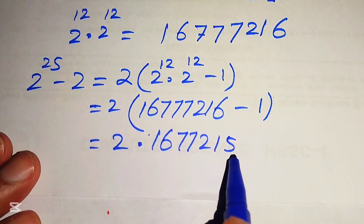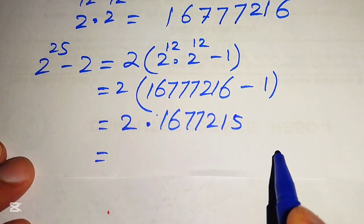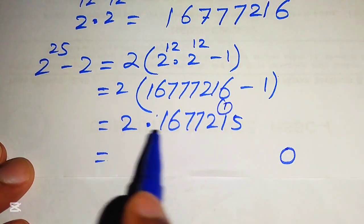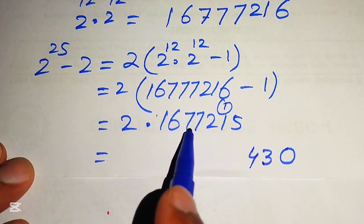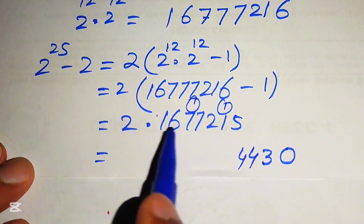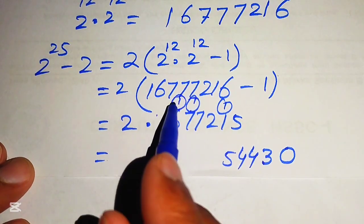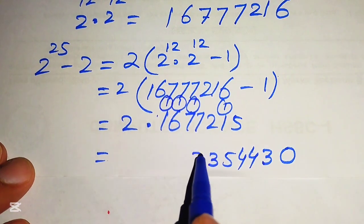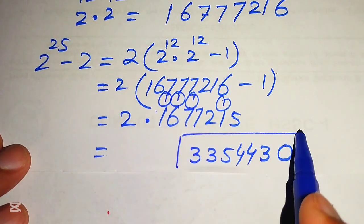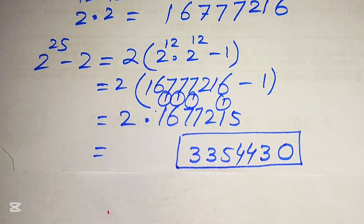Finally, we multiply 2 by 16,777,215: 2 × 5 is 10 (write 0 carry 1), 2 × 1 is 2 plus 1 is 3, 2 × 2 is 4, 2 × 7 is 14 (write 4 carry 1), 2 × 7 plus 1 is 15 (write 5 carry 1), 2 × 6 plus 1 is 13 (write 3 carry 1), 2 × 1 plus 1 is 3. So the final answer is 33,554,430. Thank you for watching — please subscribe to my channel for more exciting videos.